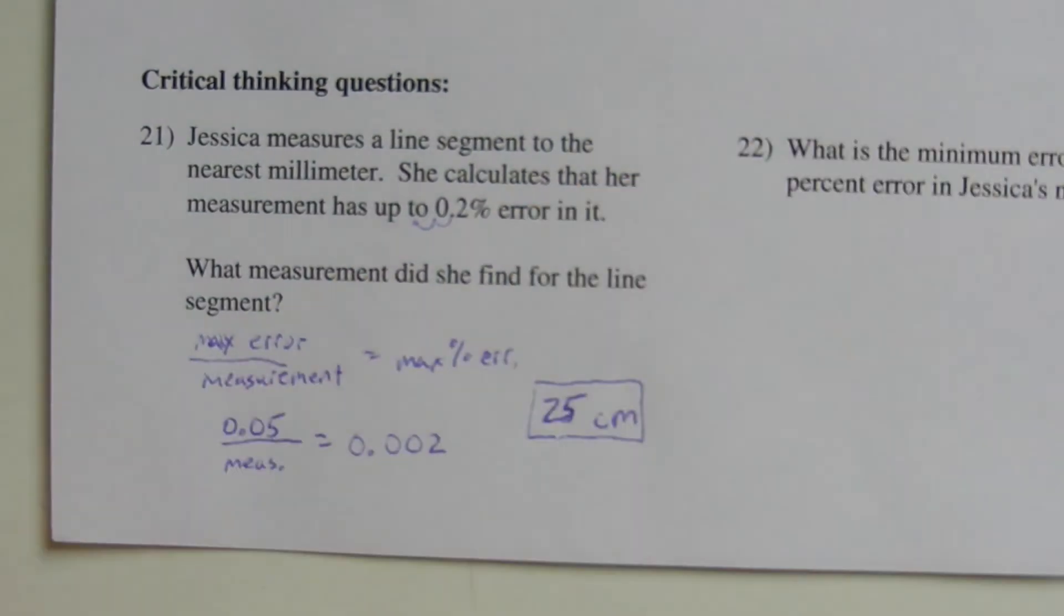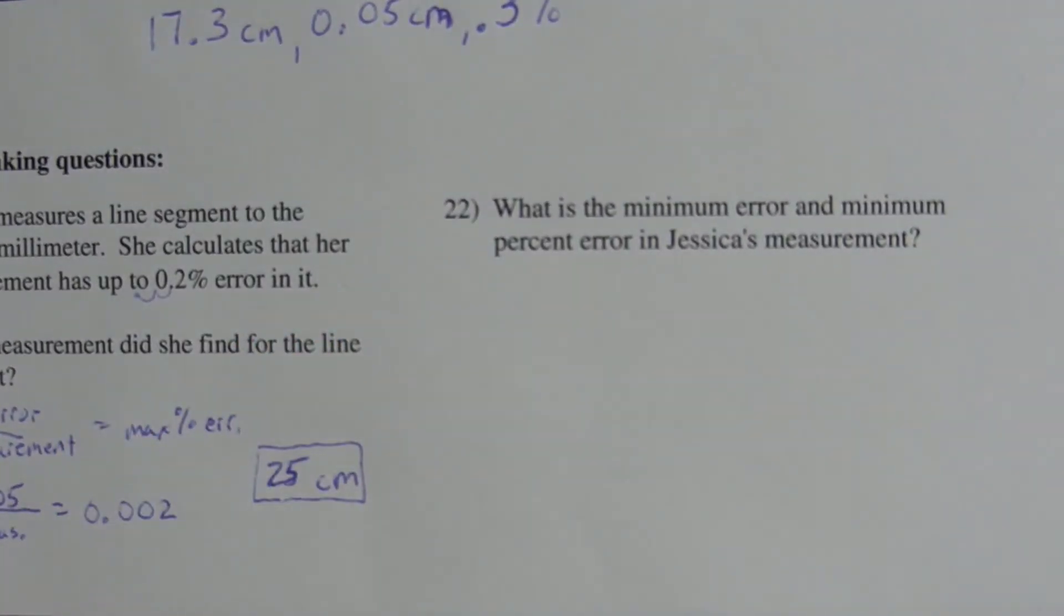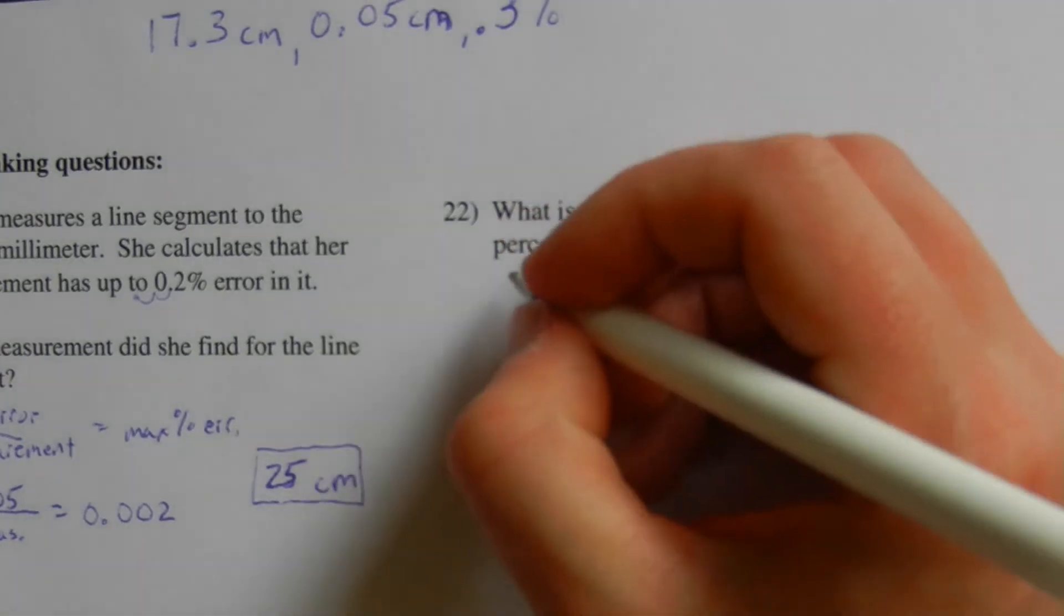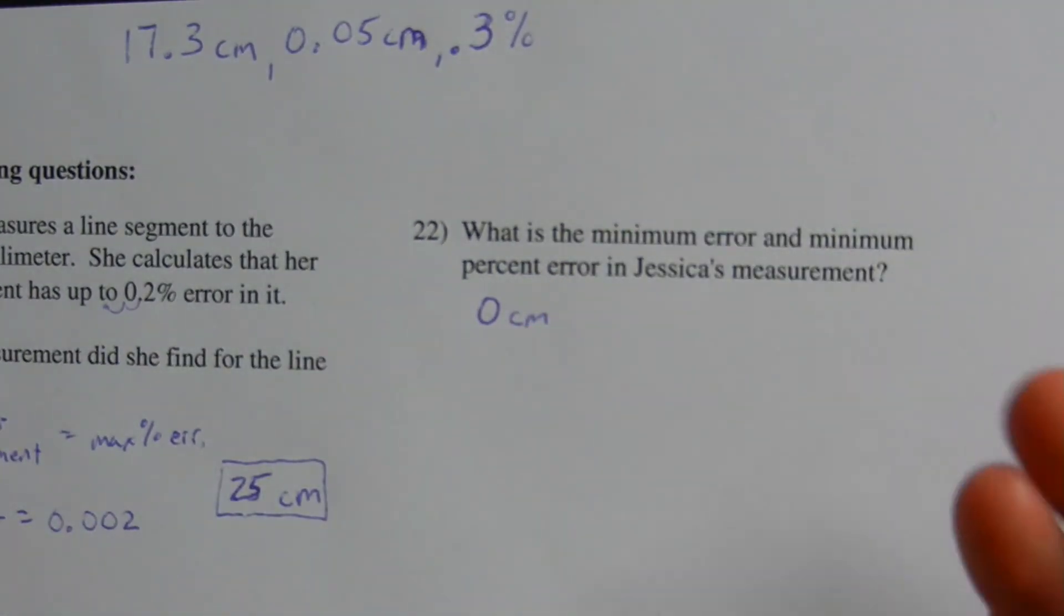And now on to number 22. What is the minimum error and what is the minimum percent error in Jessica's measurement? Well, the minimum error we can assume is 0 centimeters. That's assuming that she gets the answer spot-on correct.